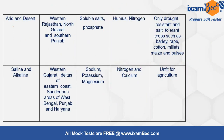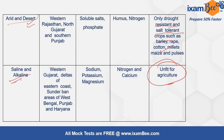Arid and desert soil is found mainly in the Thar desert region — western Rajasthan, northern Gujarat, and southern Punjab. It is mainly suitable for cactus and drought-resistant, salt-tolerant crops like barley, rapeseed, mustard, cotton, millet, maize, and pulses. Saline and alkaline soils are largely unfit for agriculture; just remember that alkaline soils have a pH greater than 8.5.